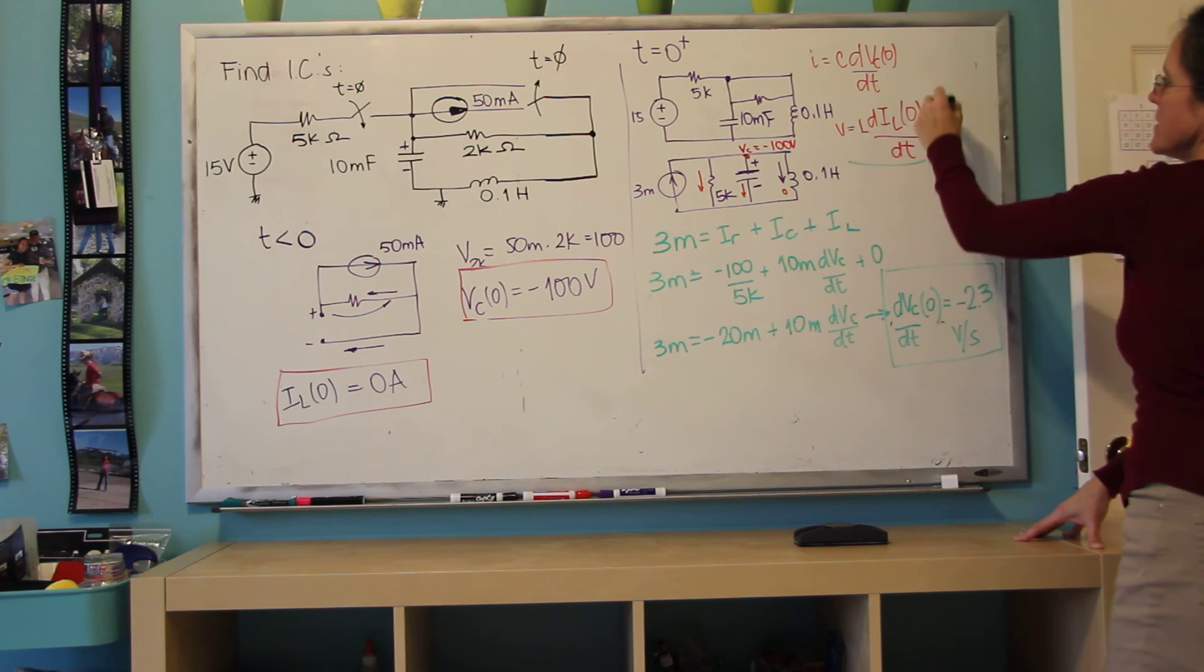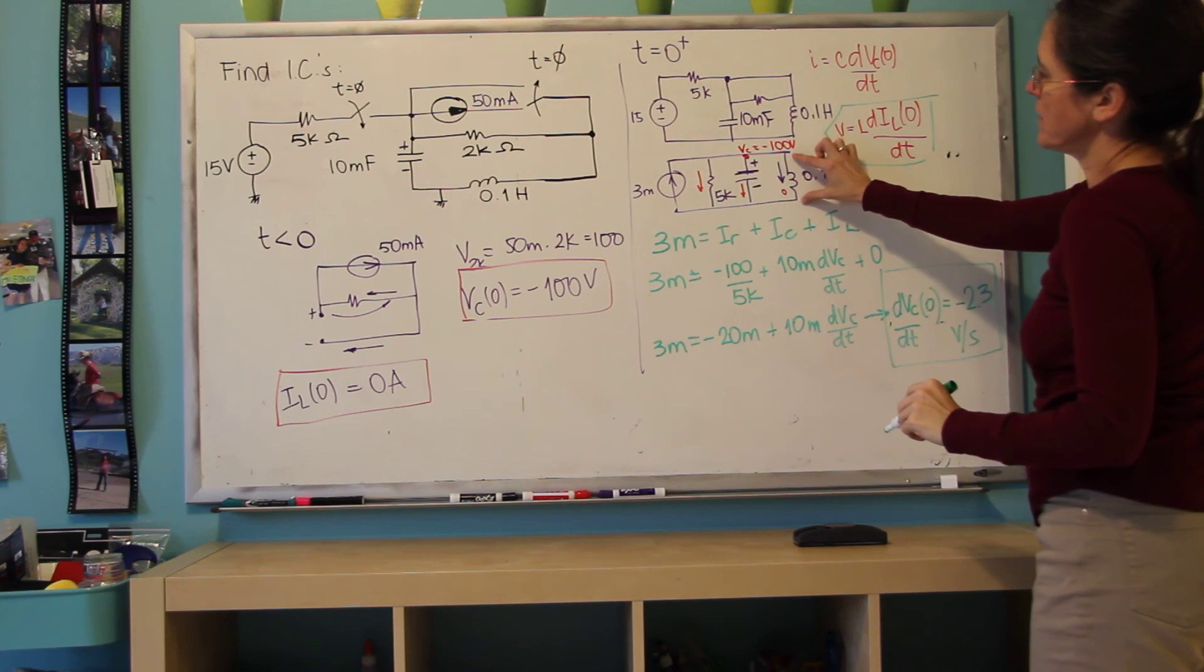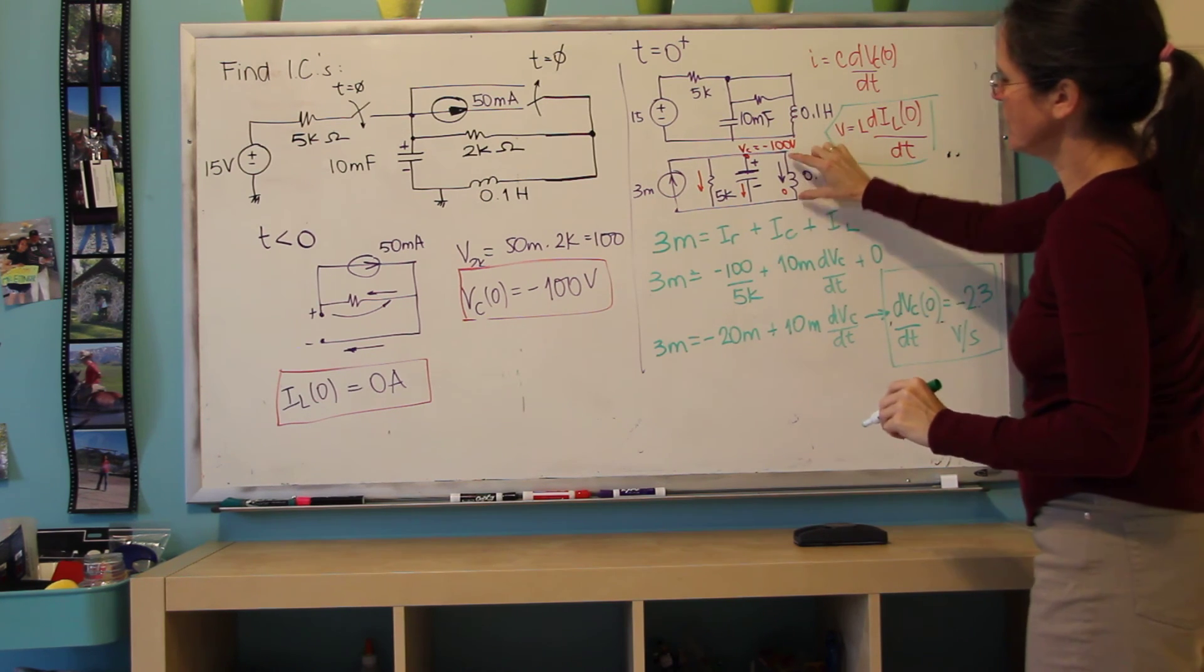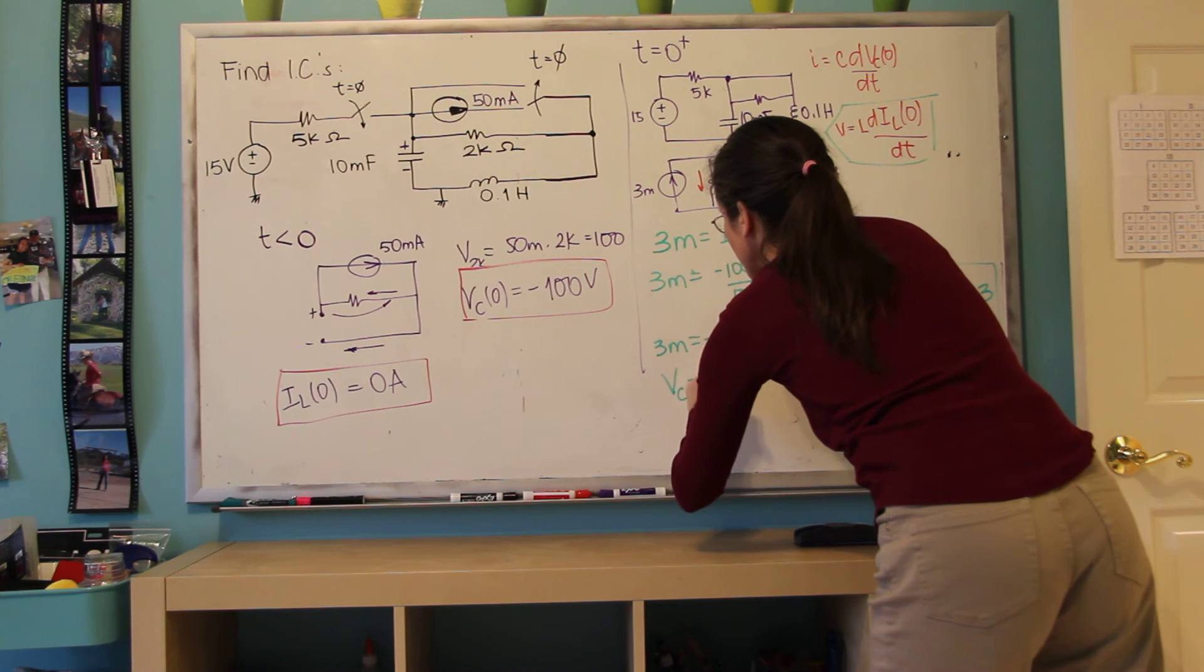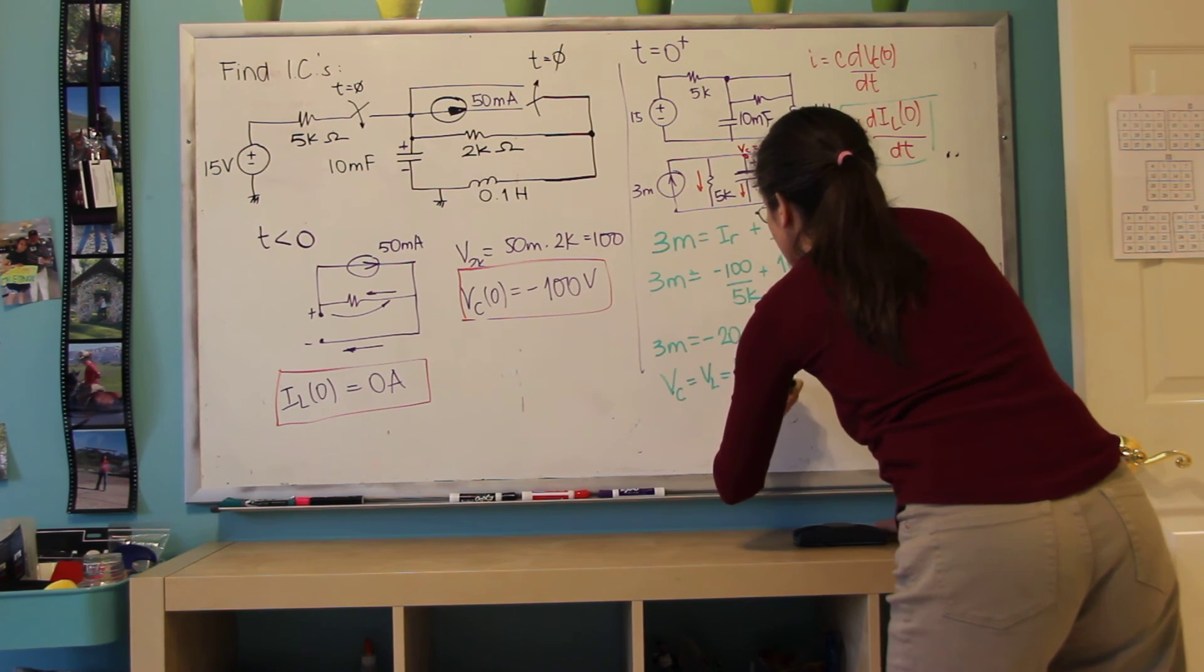So dvc dt is the easiest in this case because it's a parallel circuit, so I know the voltage here. So the voltage across the capacitor is the same as the voltage on the inductor, which is L di dt.